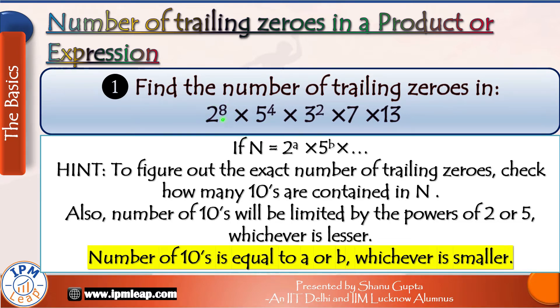Just try to see how many 2s and how many 5s are there in this product. 2^8, so how many 2s? 8. And 5^4, so how many 5s? The answer is 4. We can combine only 4 twos with 4 fives and we will get 4 tens. So highest power of 10 in this product is 4, and that is why the number of trailing zeros in this product is also 4. So remember, the number of tens will be limited by the powers of 2 or 5, whichever is lesser. So if the number can be written as 2^a × 5^b × other factors, then number of trailing zeros is the smaller number out of a and b.